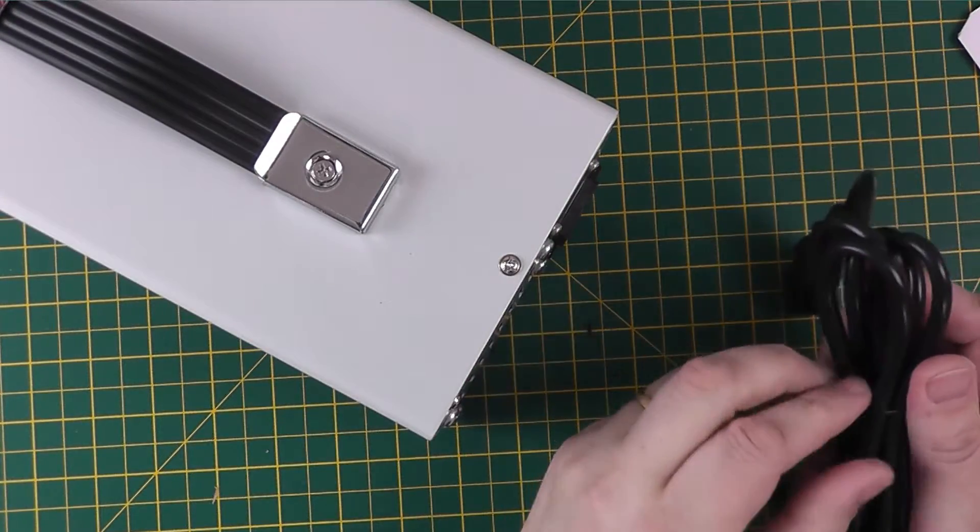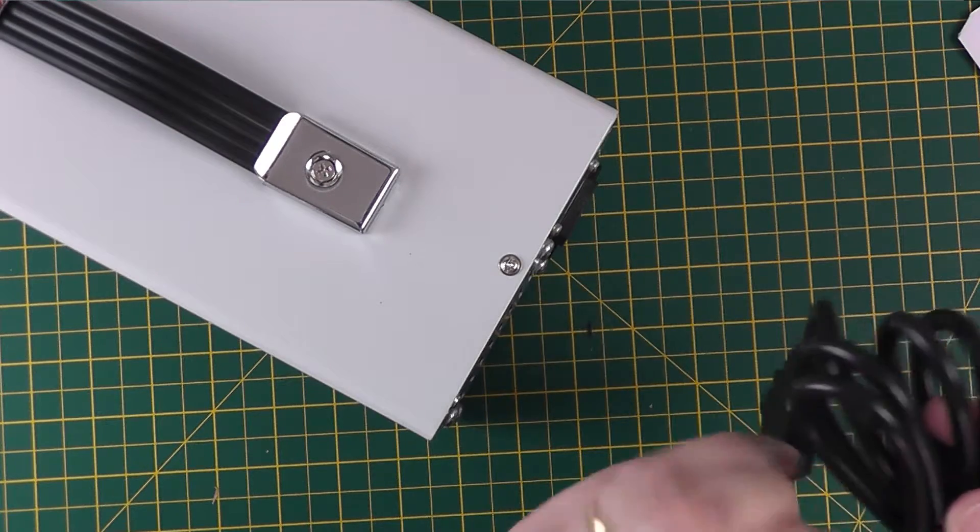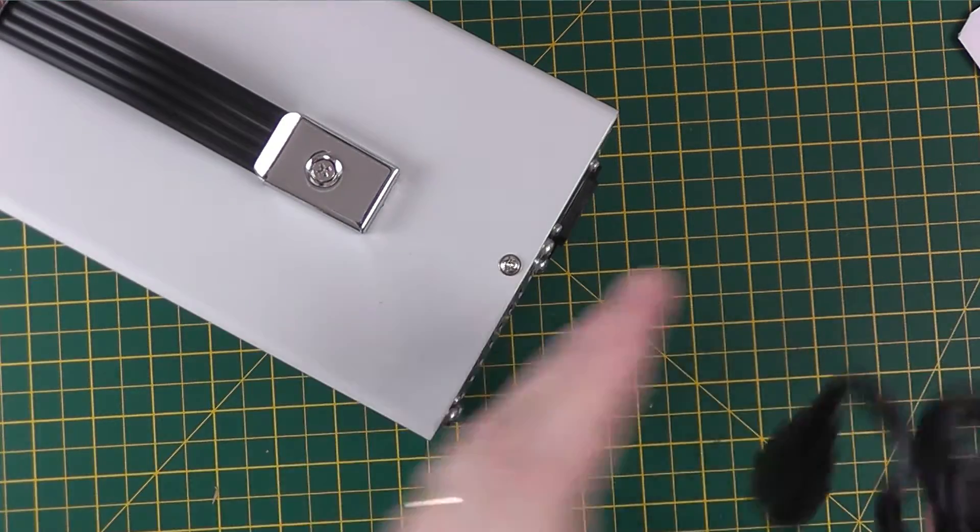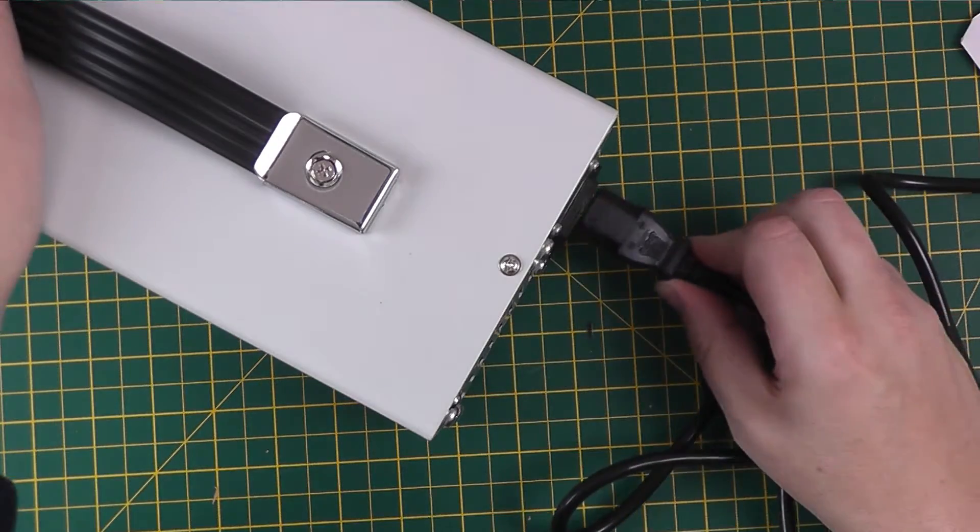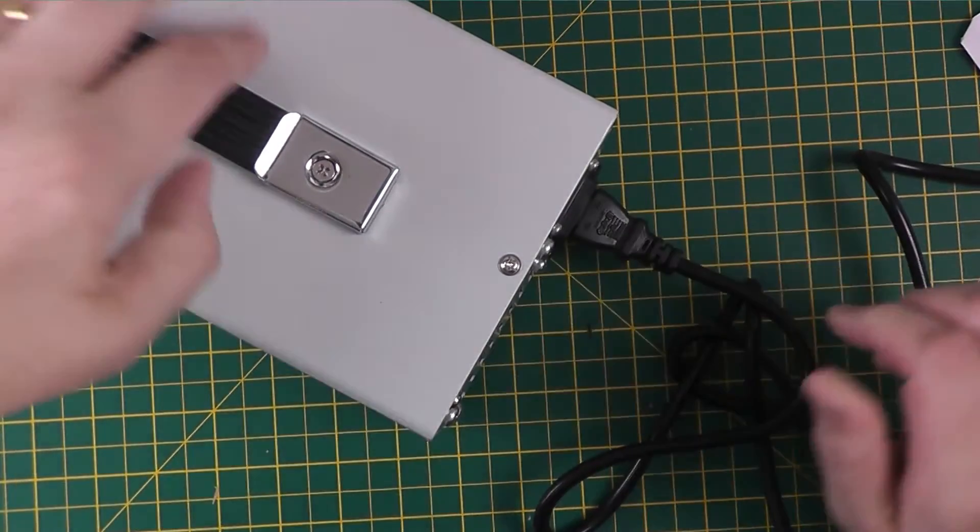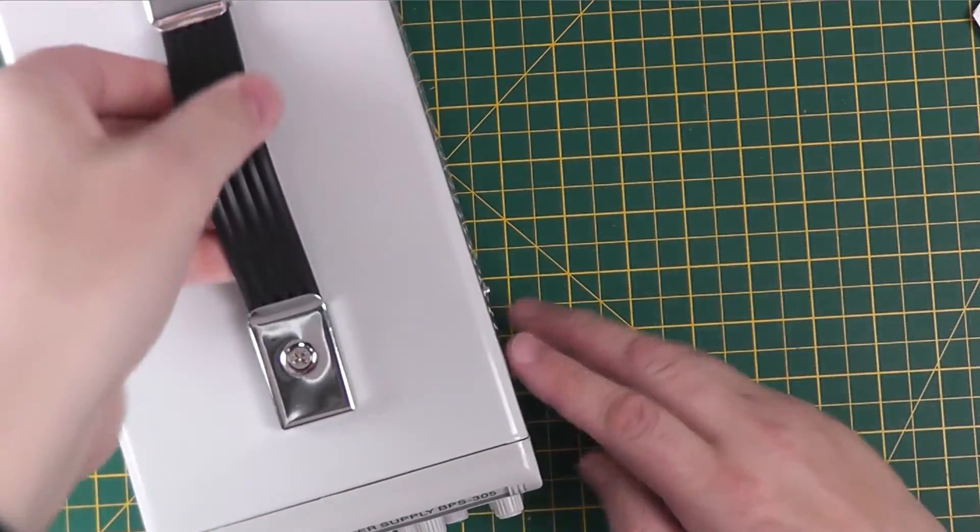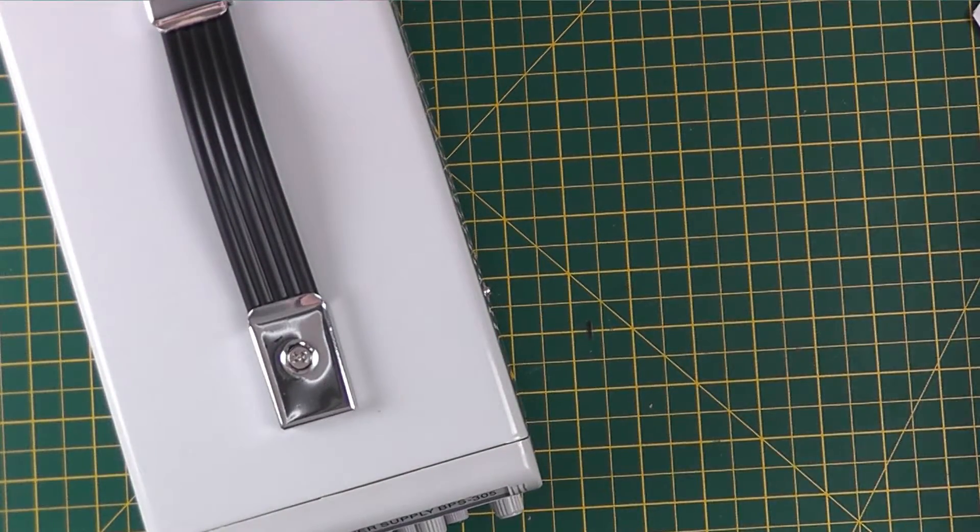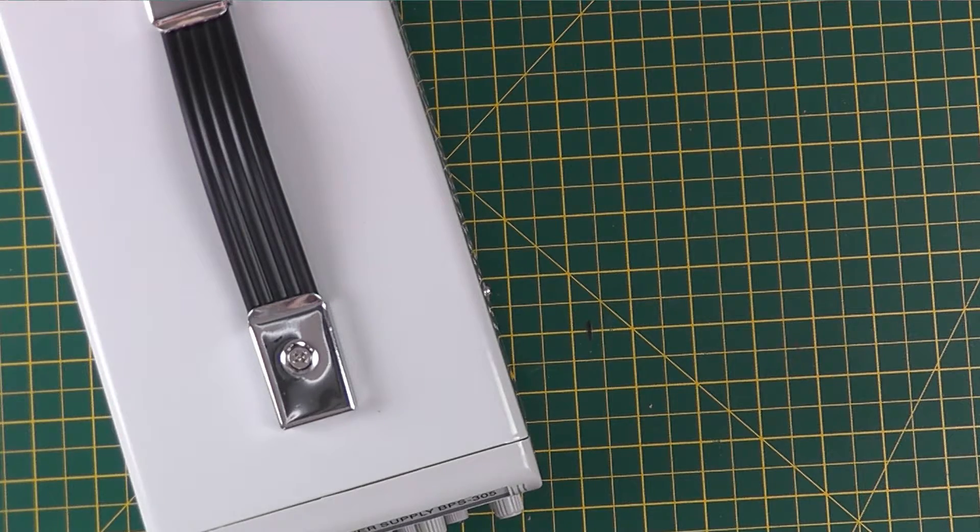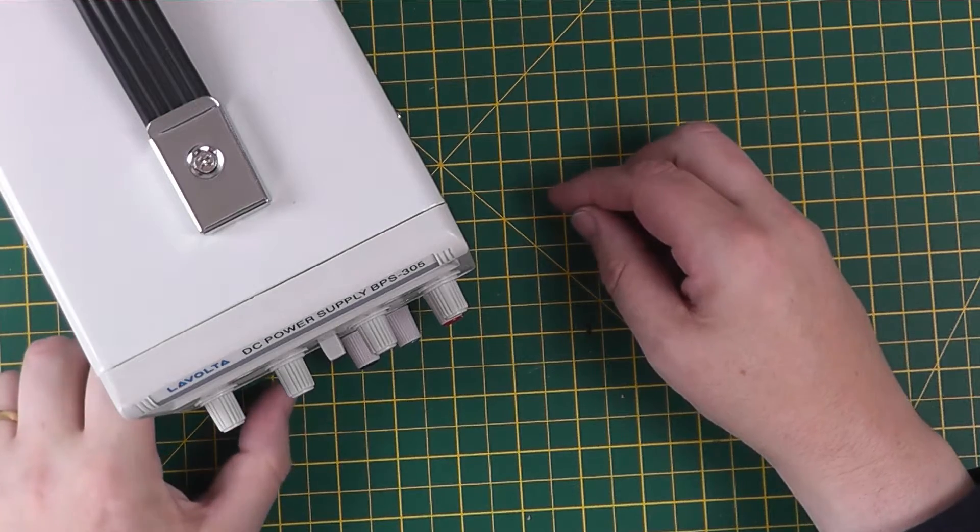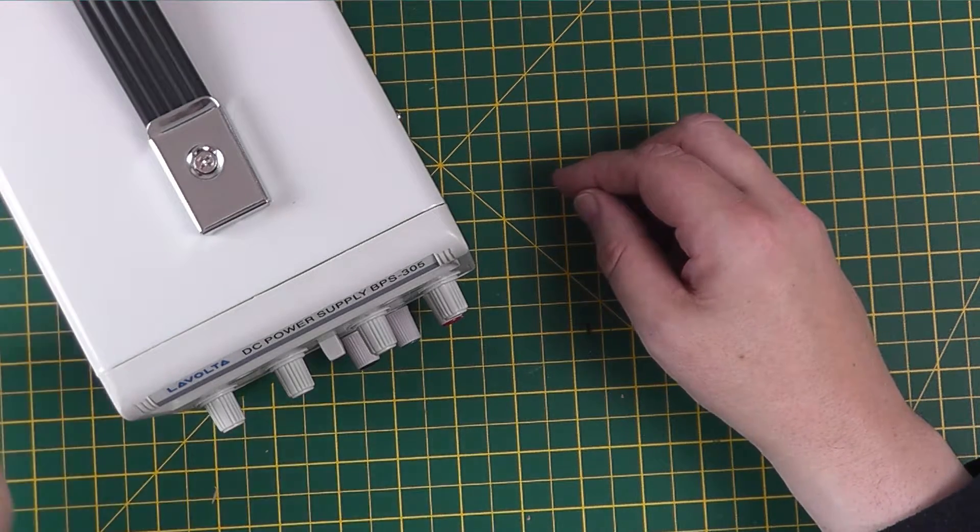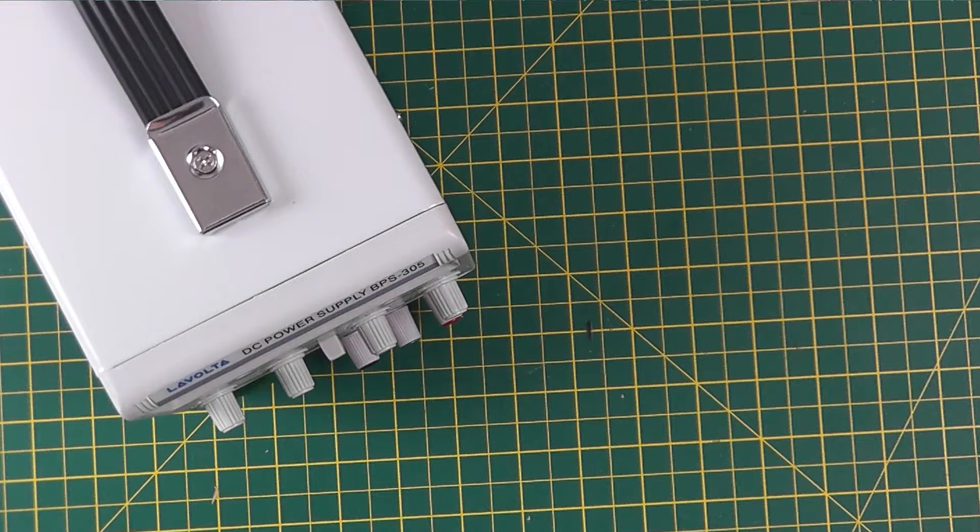First of all plug in the power cable, if I can get this thing twisted, there we go. Plug that in the back, turn it around and we plug it into a wall socket. Now that came on as soon as I plugged it in so the power button must have been on. So let's turn it off to start with and we'll see if we can get a better angle for the camera.